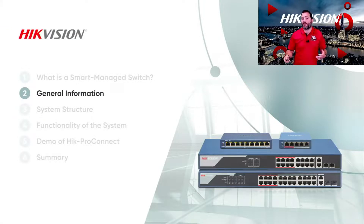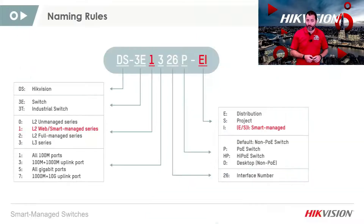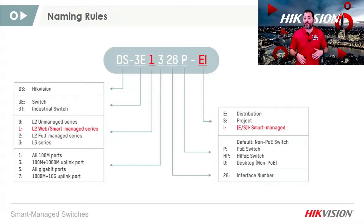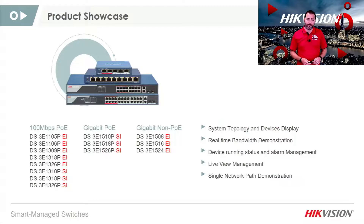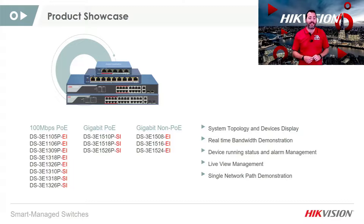Some general information covering the basics including naming rules. Take the DS3E1326P-EI smart switch as an example. Two main competitors in this series are the SI and the EI. The SI supports web management while the EI supports remote configuration from IVMS 4200. For IVMS 4200, the configuration of the SI and EI series are both the same. There are three different port configurations: 100 megabits per second, gigabit Power over Ethernet, and gigabit without PoE. All devices support system topology review, real-time bandwidth, alarm management, and live view management.